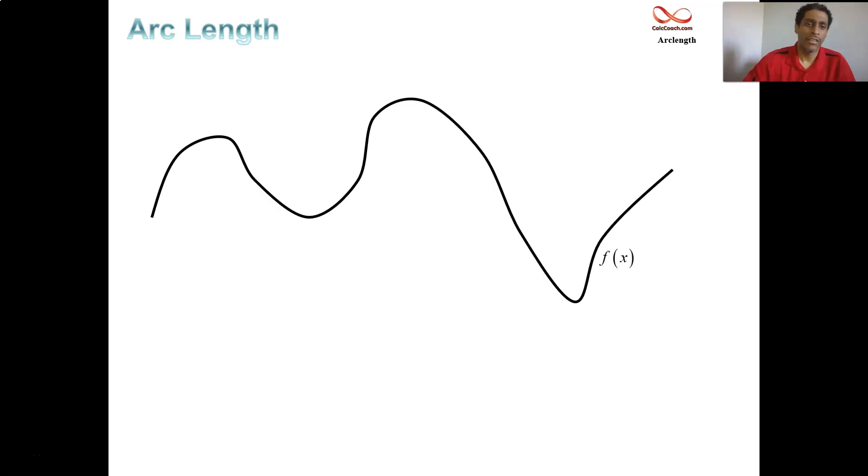First up, the idea is you have a function, and we like to measure how long the road is if the road fits the function. If you were to walk from some point A to point B on the curve, how long of a distance have you traveled?